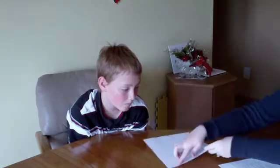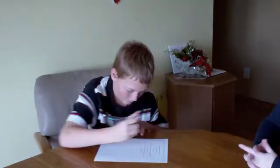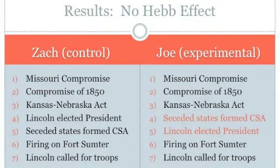I was unable to prove my hypothesis because the control subject, Zach, outperformed the experimental subject by placing all of the events in the correct order without any repetition, while the experimental subject Joe missed two answers. Therefore, there was no Hebb effect. Joe switched two of the middle answers — numbers four and five — which is a transposition error.